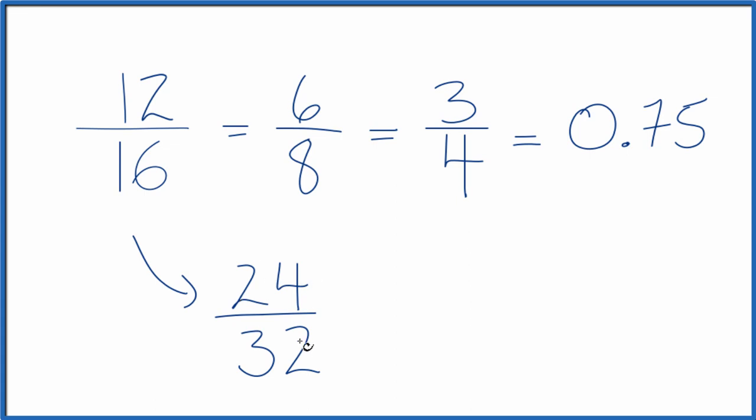So 24 32nds, that's another equivalent fraction for 12 16ths. Divide 24 by 32, you get 0.75, just like we found before.